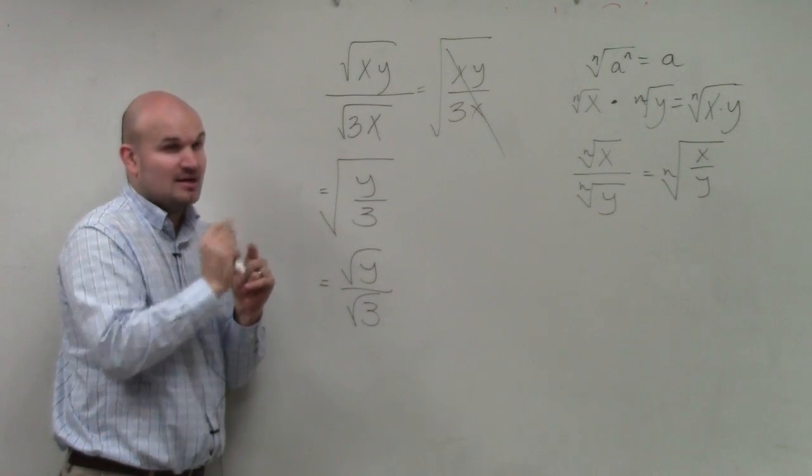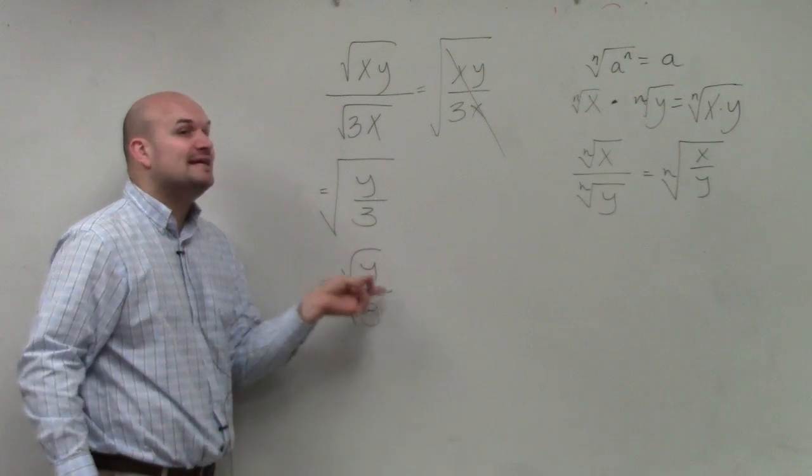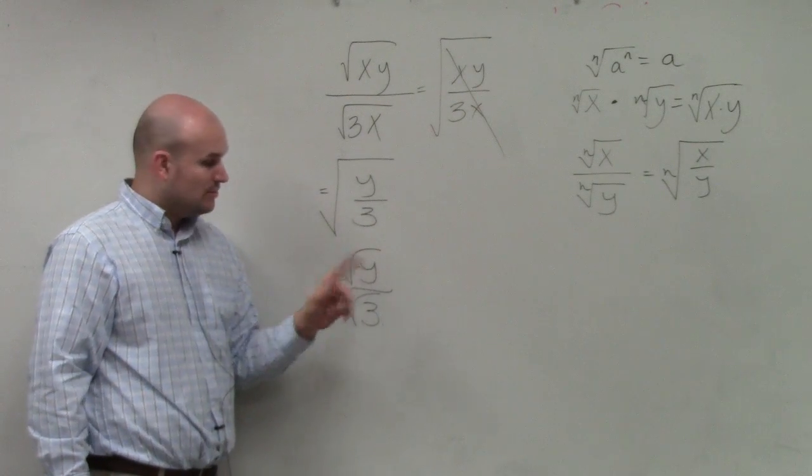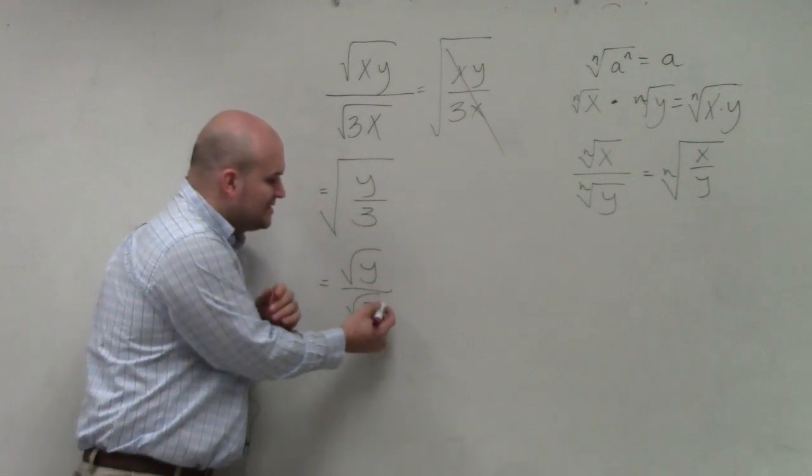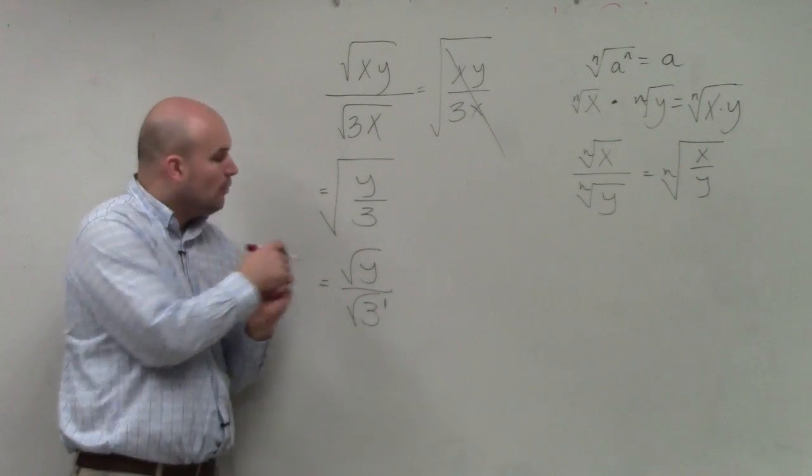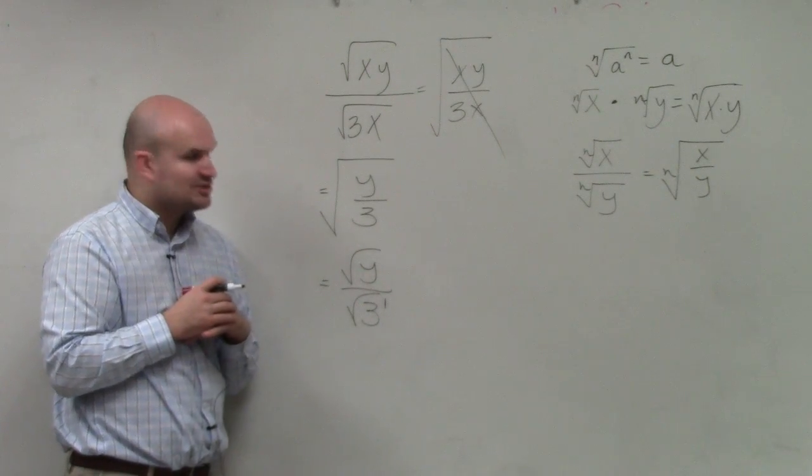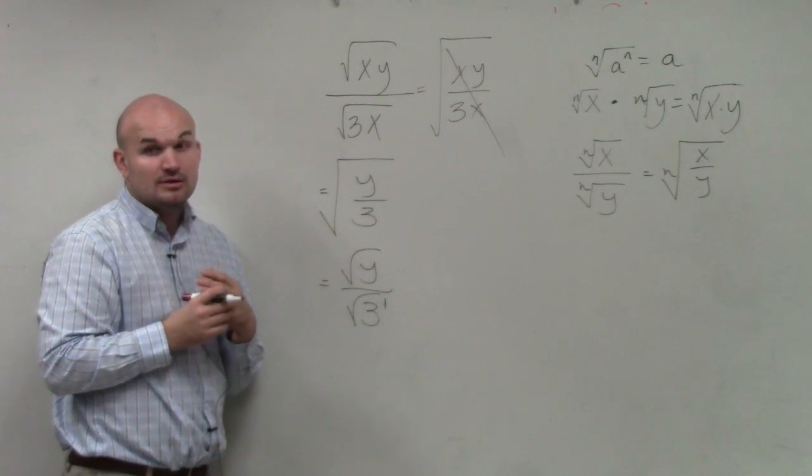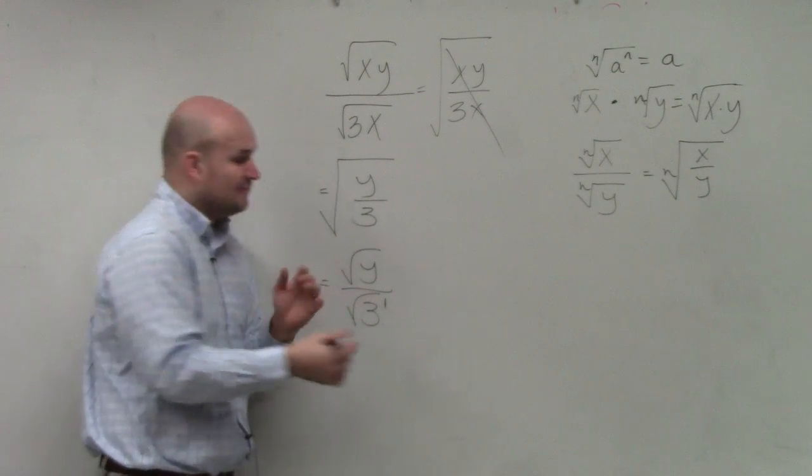No, no, just listen to my question. You're right. But what power does 3 need to be raised to? 2. So right now, 3 is being raised to the first power, right? What do I need to multiply 3 by so it's 3 squared? Which is 9, which you said? 3. You just need to multiply by 3, right? Or 3 to the first power.